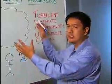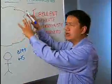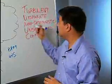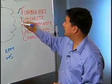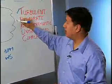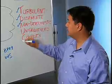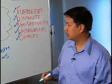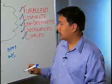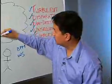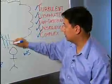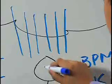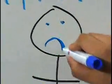All these events start surfacing themselves in this big black cloud hanging over your company, and you can't tell what's going on. These events are turbulent, disparate, non-deterministic, unsequenced, and complex. They start raining down upon you, and you can't control the rain — and you're getting wet. So that's probably making you pretty sad.